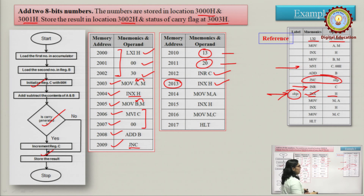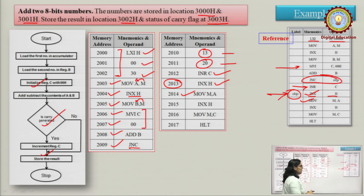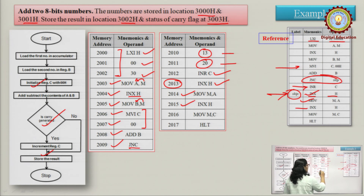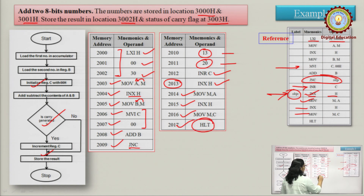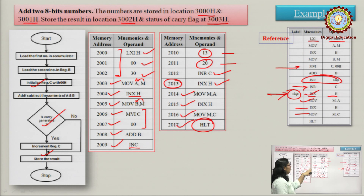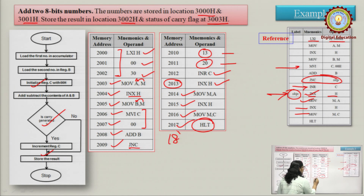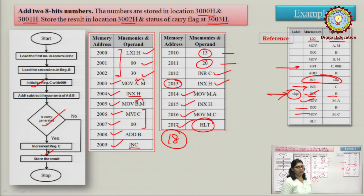Iske baad MOV M,A — 1-byte — to store result. Phir pointer increment — 1-byte. Finally carry flag ka status store karwaya — 1-byte. And then end of program — 1-byte. Toh agar hum yahaan se total count karein, is program ne hamare 18 memory locations ka use kiya hai.